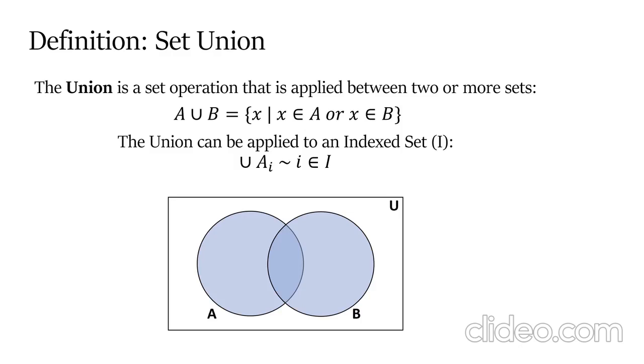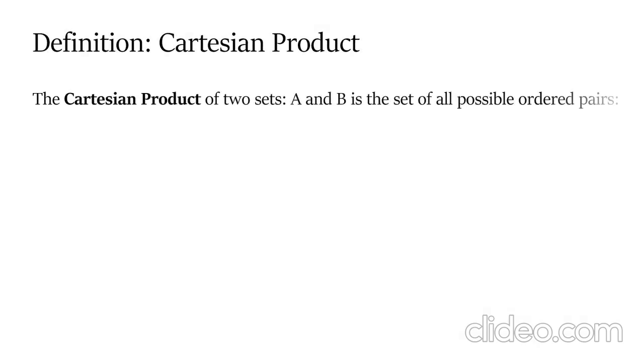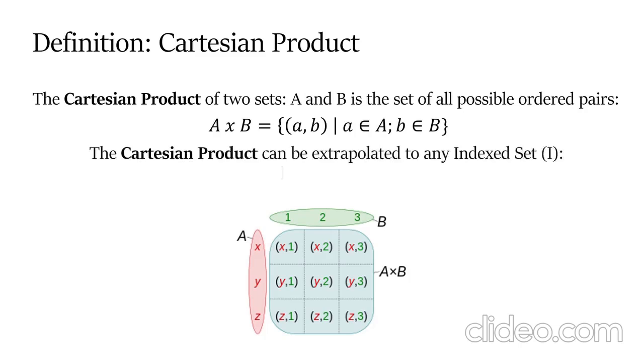Definition of Cartesian Product: The Cartesian product of two sets A and B is a set of all possible ordered pairs (a, b) such that a is in A and b is in B. We can extrapolate the Cartesian product onto an arbitrary collection of index sets.